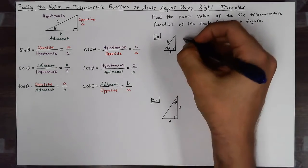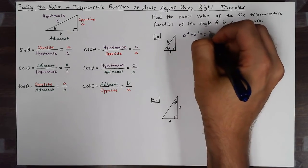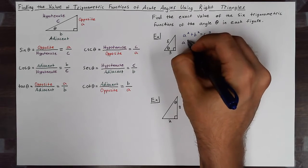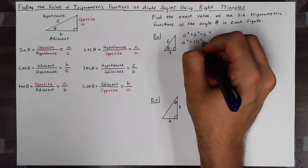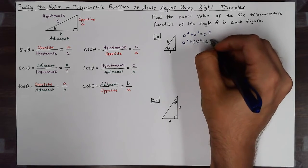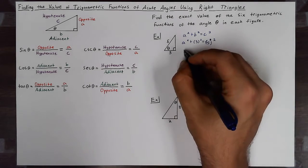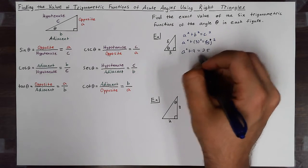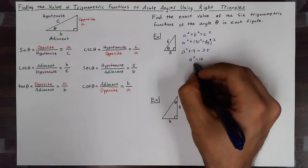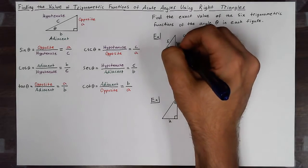I will use the Pythagorean theorem, which is a squared plus b squared equals c squared. c will be five and b will be three, so I'll have a squared plus three squared equal to five squared, giving me a squared plus nine equals 25. So a squared equals 16. Taking the square root of both sides, a is equal to four. So now I've found my opposite side.